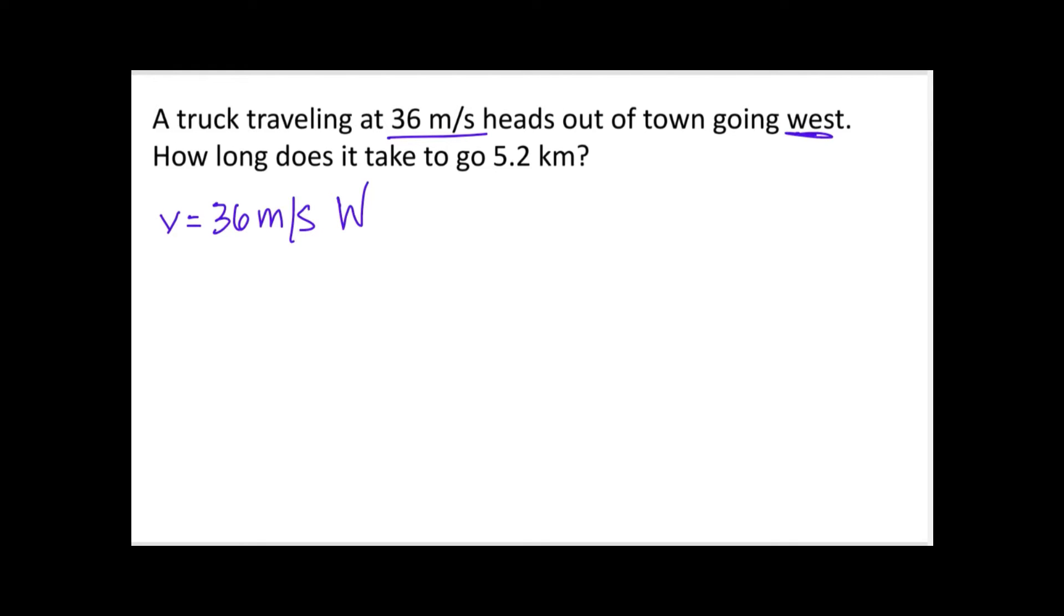Another thing you could also do is, let's say you decided that east was the positive direction and west was the negative direction. You could say also negative 36 meters per second. So a sign, like a plus or a minus, is also considered a direction when we're talking about velocity. So velocity has to have a direction, but it can be northeast, south, or west, or it can also be plus or minus if that's what you've decided.